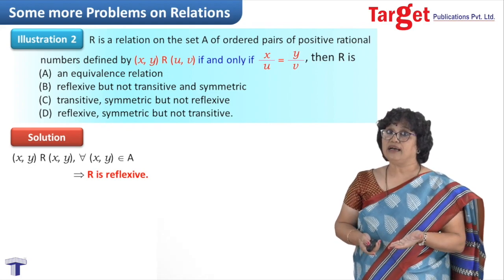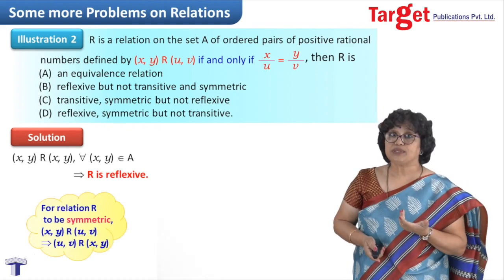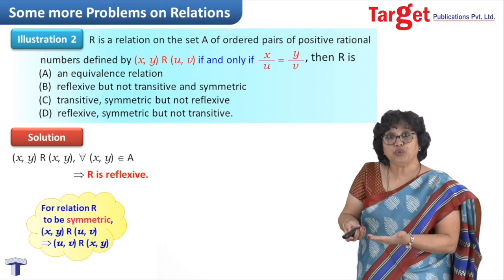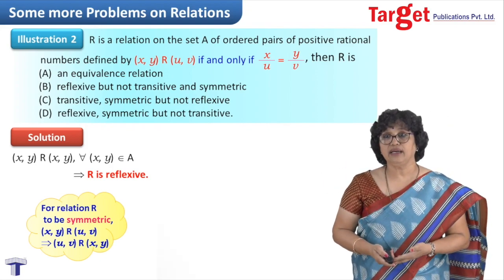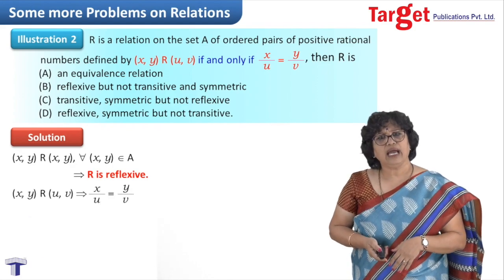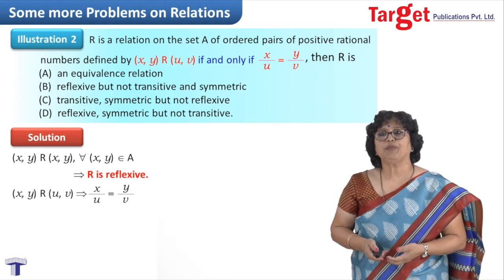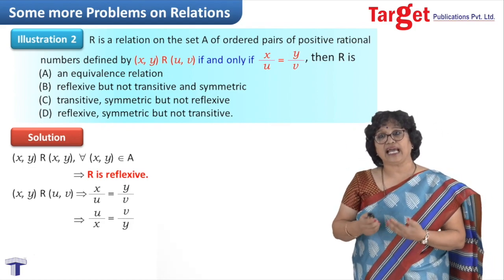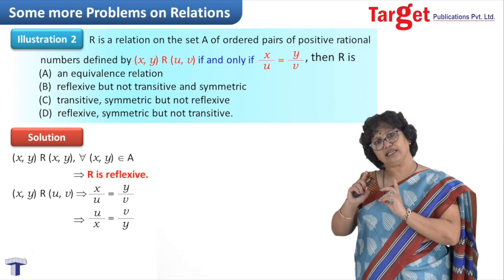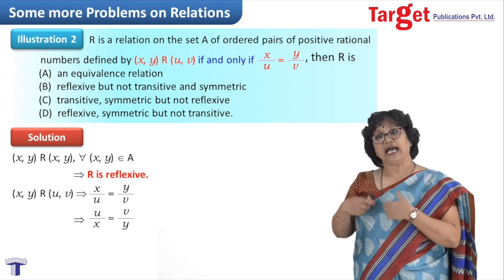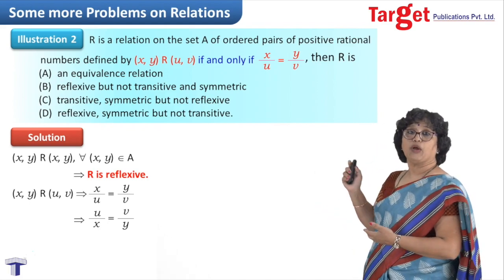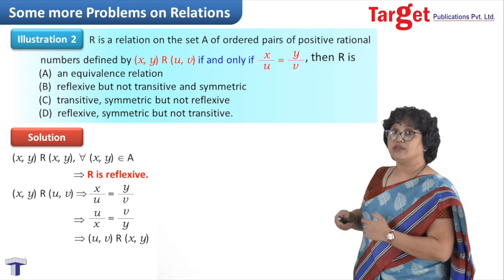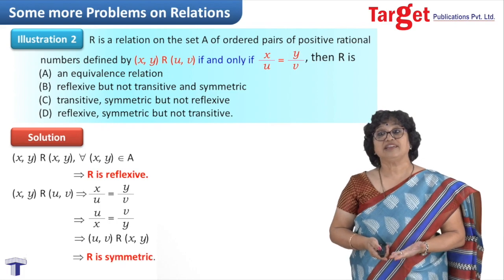Now, is the relation symmetric? We check: if (x, y) is related to (u, v), does it lead to (u, v) related to (x, y)? Starting with x/u = y/v, we take reciprocals on both sides to get u/x = v/y. This means (u, v) is related to (x, y), which is exactly what we wanted. So the relation is symmetric.